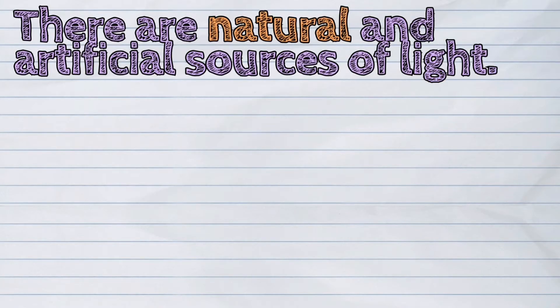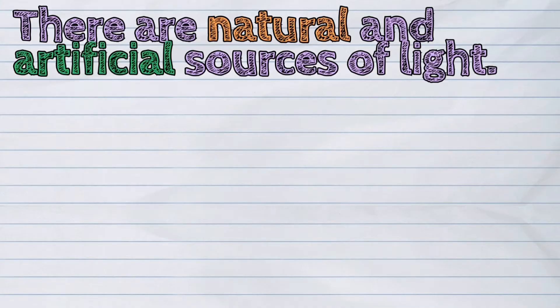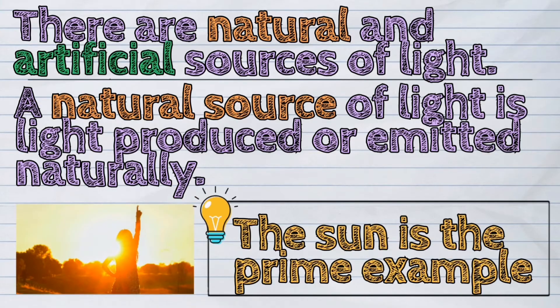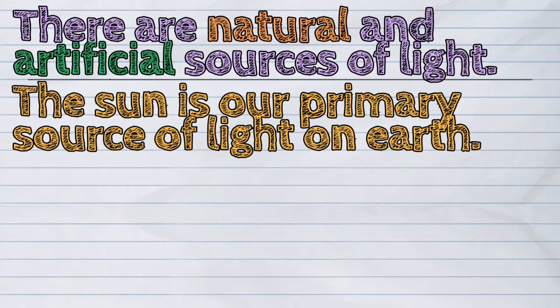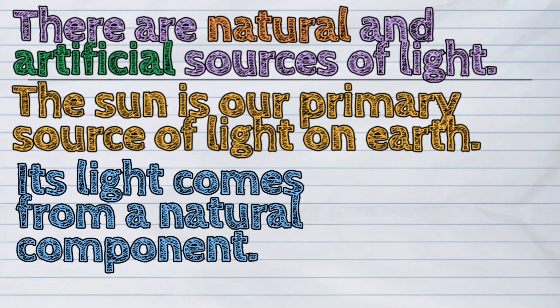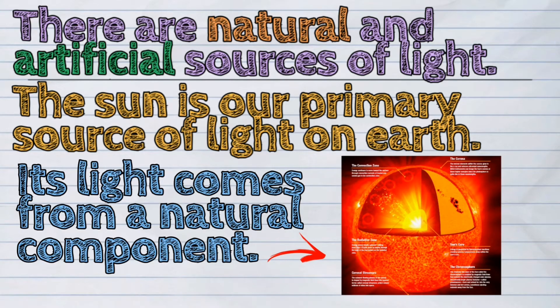There are natural and artificial sources of light. A natural source of light is light produced or emitted naturally. The sun is the prime example of a natural source of light. It is our primary source of light on earth. Its light comes from a natural component.